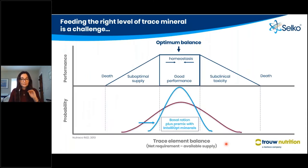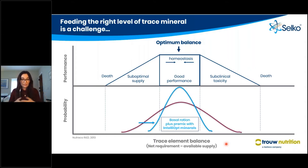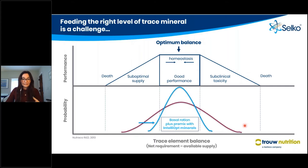Looking at the trace mineral requirement and supplementing the animal's nutritional requirements within the diet, we need to think about trace minerals as having an optimum balance. This optimum balance means that the animal is in a state of positive homeostasis, which is where the animal has good performance. These two lines at the bottom represent the probability that the animals are either in this optimum balance phase — optimal supply — or in subclinical toxicity.